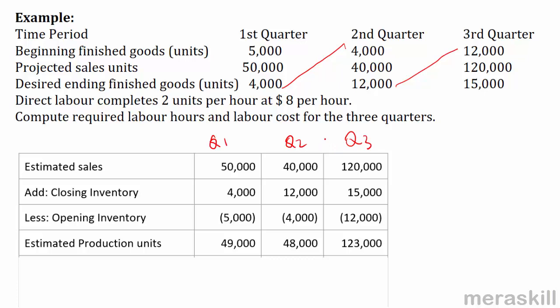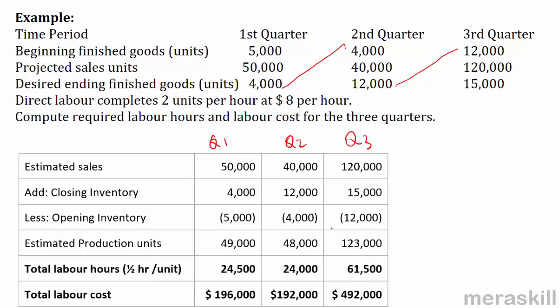With two units completed per hour, I need 49,000 ÷ 2, 48,000 ÷ 2, and 123,000 ÷ 2 hours, then multiply by $8 per hour to get the labor cost. This gives labor costs of $196,000, $192,000, and $492,000 for the three quarters. That is the labor budget.